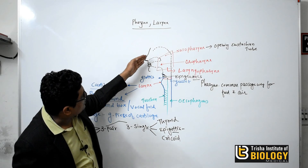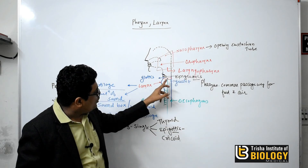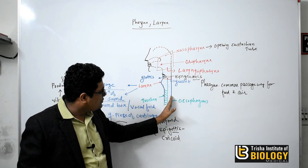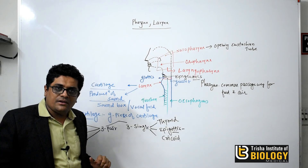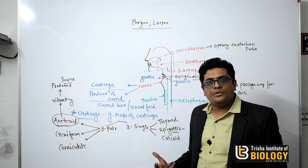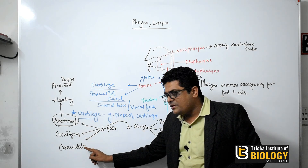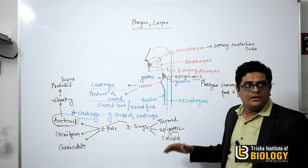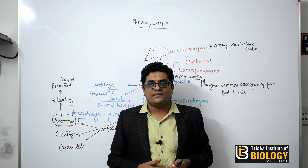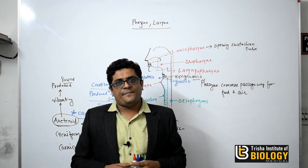So this is all about the pharynx and the larynx. The nasal cavity and mouth open into the pharynx, which has three parts: nasopharynx, oropharynx, and laryngopharynx. It then divides ventrally into the trachea and dorsally into the esophagus. The trachea opening is the glottis. The larynx has nine pieces of cartilage — three pairs (arytenoid, cuneiform, corniculate) and three single (thyroid, epiglottis, cricoid). The arytenoid cartilage helps in sound production. In the next video we will discuss the trachea. Thank you.